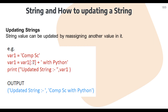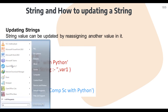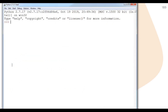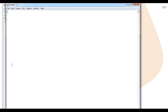Here, variable1 is again assigned using slicing — variable1 up to index 7, then concatenated with 'Python'. So it will print the updated string in variable1, which will be 'computer science with Python'. This particular sliced part will extract 'computer science', and then we add 'Python' using the concatenation operator and assign it back to variable1.